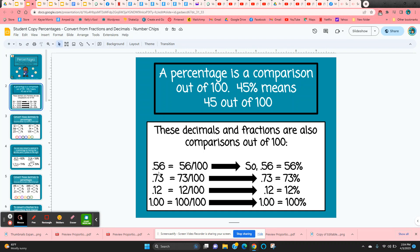So if you start with a decimal, 56 hundredths, if you read it correctly, is the same thing as a fraction, 56 hundredths. So 56 hundredths, a comparison out of 100, would be 56%. 73 hundredths, 12 hundredths, and one whole would be 100 out of 100, or 100%.